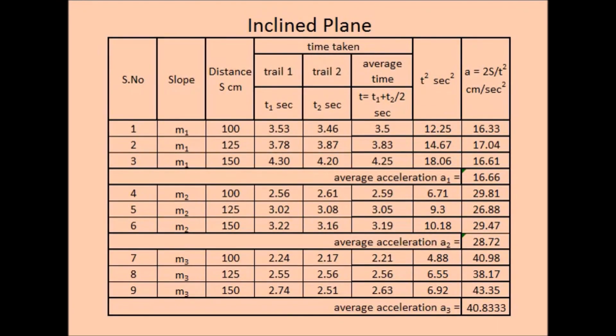So after calculations, this is the table. Under slope we have m1 and under distance 100 cm. So two values t1 and t2 are noted. Their average is calculated. And square of that time is calculated. And finally acceleration is calculated. Similarly for 125 acceleration is calculated. Similarly for 150 acceleration is calculated. These three values are added and divided by 3. We get average value of acceleration in the first case. So similarly for slope 2 accelerations are calculated.